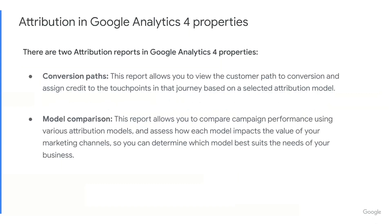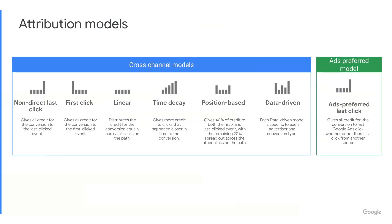Google Analytics 4 offers two attribution reports today. The conversion paths report gives you a view of your customer's paths to conversion and assigns credit to the touchpoints in those journeys based on the attribution model you select. And the model comparison report allows you to compare campaign performance using different attribution models and assess how each model impacts the value of your marketing channels. Here you can see the models available in Google Analytics 4 Properties.